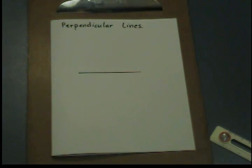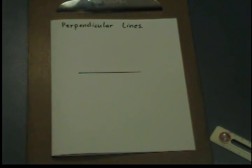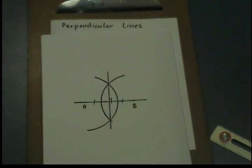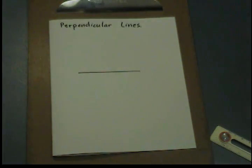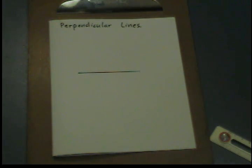How do we construct perpendicular lines? Constructing perpendicular lines is similar to bisecting a segment. When we bisect a segment, we make a perpendicular bisector using two points. In our case, we're going to be creating perpendicular lines using a point on the line, and then constructing a perpendicular line using a point not on the line.